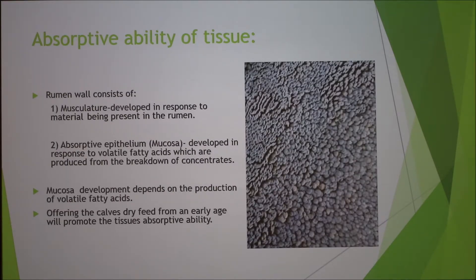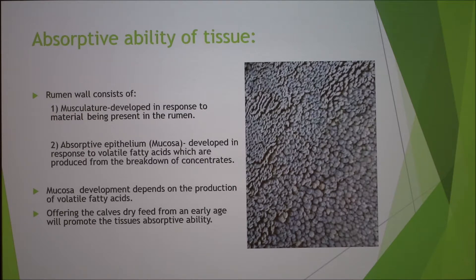The absorptive ability of the tissue: the rumen wall consists of musculature which is developed in response to having substances in the rumen. The epithelium is developed in response to volatile fatty acids produced from the breakdown of concentrates. The mucosa is developed depending on the production of volatile fatty acids, so dry feed must be available from an early age to promote this.